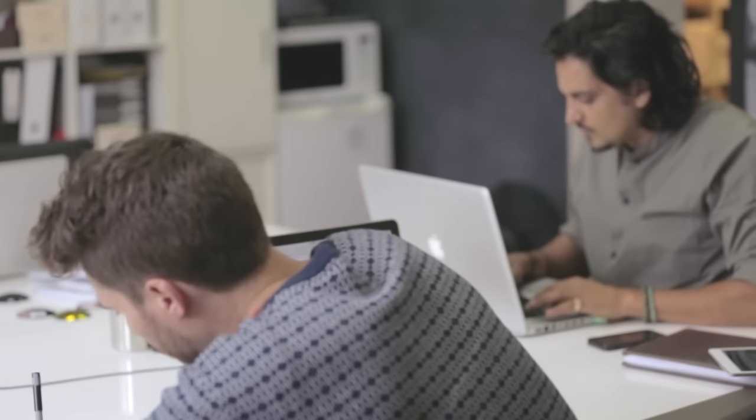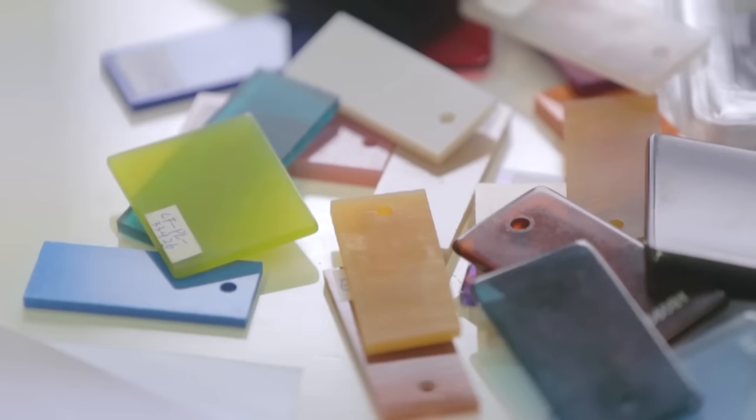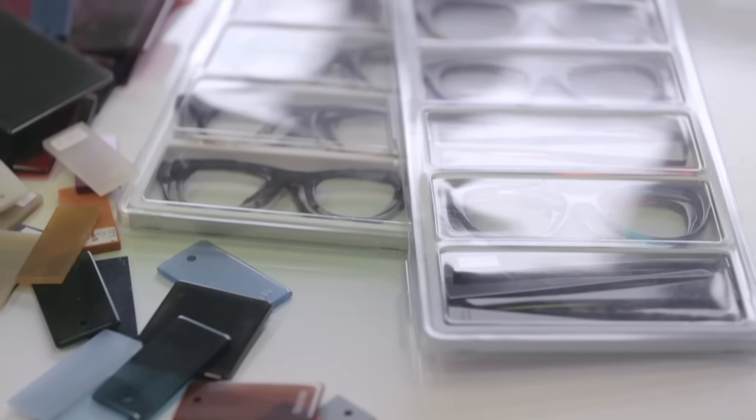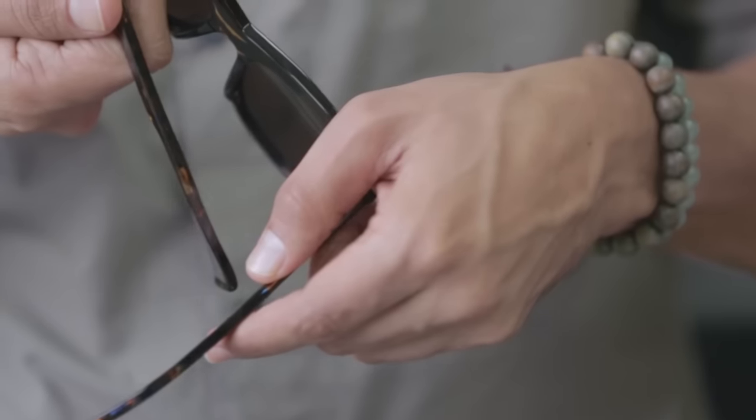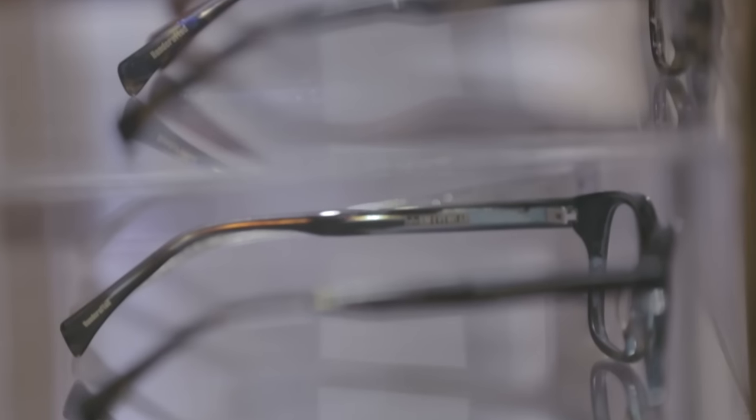So the journey begins by me having a concept, an idea. I turn that into a hand-sketched technical drawing. It then goes to choosing materials in Venice and Italy. Those materials then go to Shenzhen in China, where materials get turned into a handmade frame. That frame then goes to a warehouse in Hong Kong, where it's quality controlled. From then it goes out to our distributors and to the consumer.